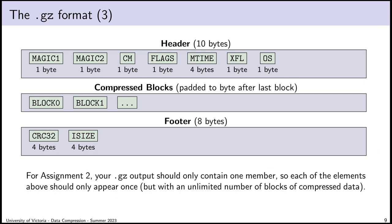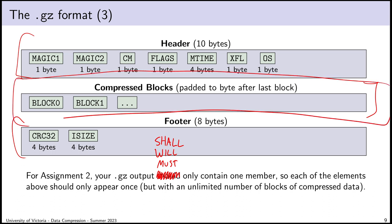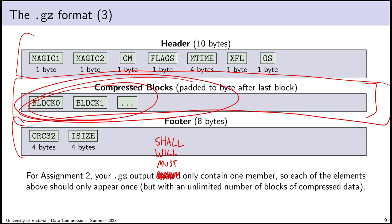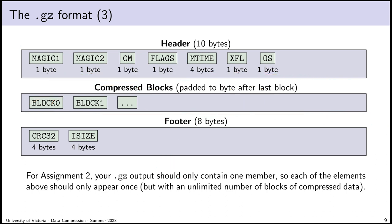For assignment two, your .gz output shall contain only one member — the header, footer, and stuff in between should each appear only once. Inside the compressed blocks, there could be a large number of blocks of data, but that's up to the Deflate bitstream itself. The beginning of your .gz file will be the header, which will appear only once, and the end will be the footer, also appearing only once.